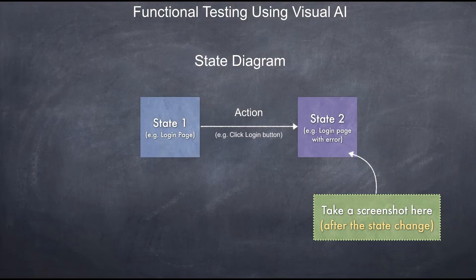The main idea is that once the functionality happens — like logging into an app — simply take a screenshot of the resulting page or the resulting state of the app, and take screenshots every time the test runs and compare the new screenshot with the original. If there is a difference, mark the test as failed; otherwise mark it as passed. Sounds pretty simple.